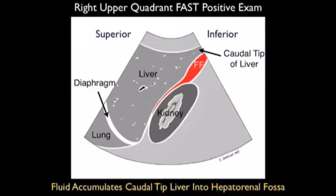Here's a nice illustration showing a positive examination from the Right Upper Quadrant View of the Trauma FAST Exam. We see the liver in the middle of the image, and the kidney slightly posterior and inferior to the liver. The preferential deposition of fluid, shown in orange, layers out predominantly around the caudal tip of the liver, and flows from the caudal tip into that potential space — Morrison's pouch — in between the liver and the kidney.